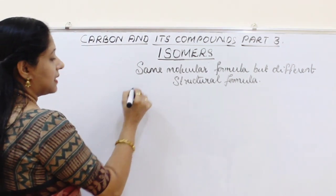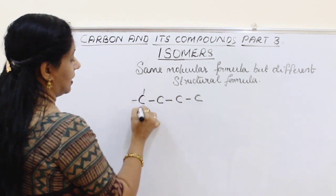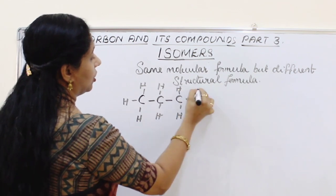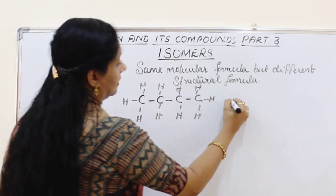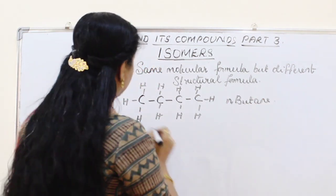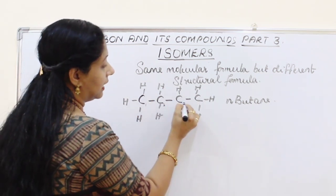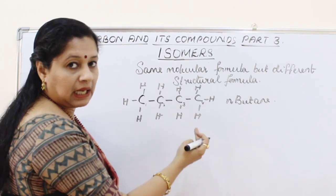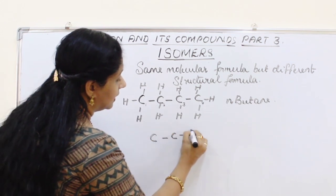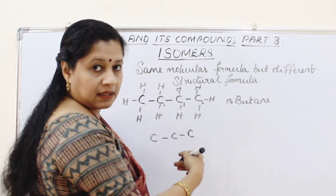So if you write butane, the first structure can be written as the normal straight-chain structure of butane. This is known as normal butane, or n-butane. Then for the second structure, out of these four carbon atoms, we take three in a single line and give the fourth one as a branch.